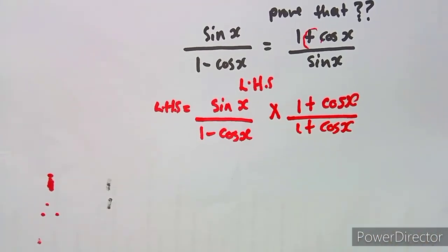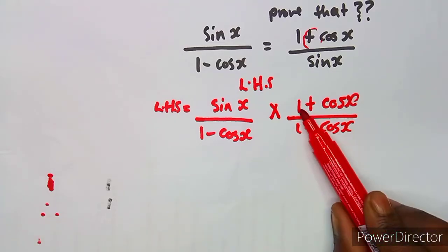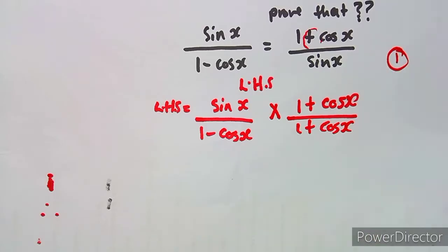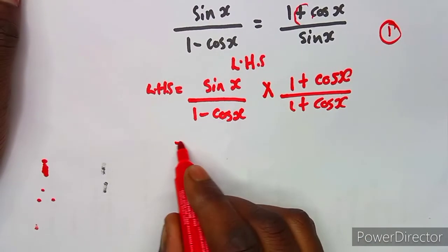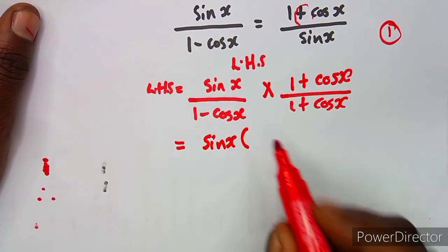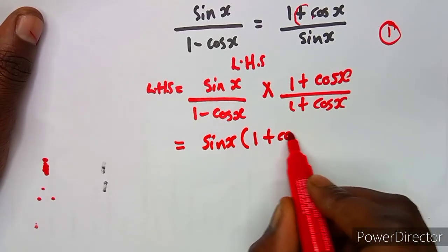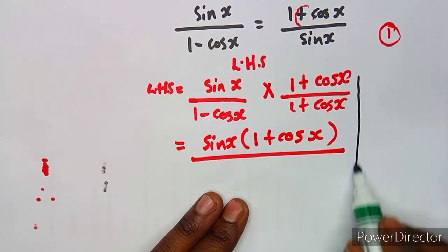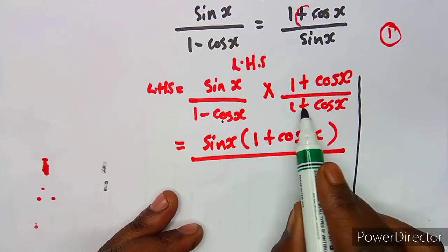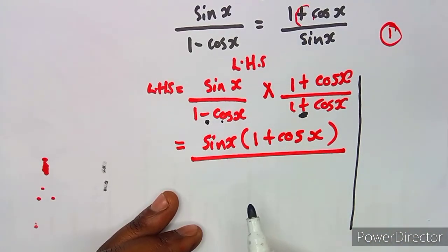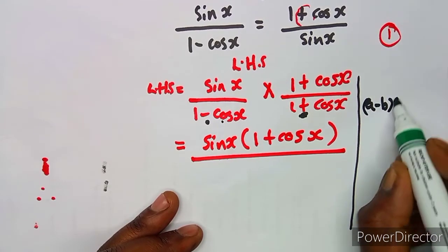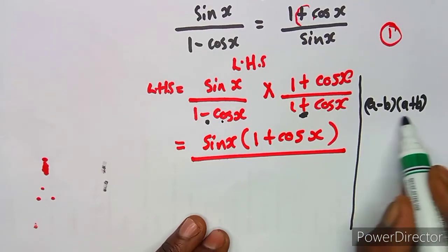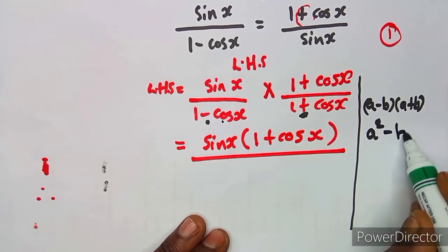Multiplying by (1 + cos x)/(1 + cos x) doesn't change the value — it's the same as multiplying by 1. The numerator becomes sine x times (1 + cos x). In the denominator, we have (1 − cos x)(1 + cos x), which is a minus-times-plus pattern. From algebra, we recognize this as the difference of two squares.